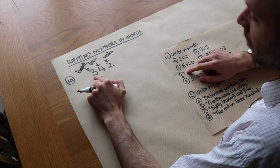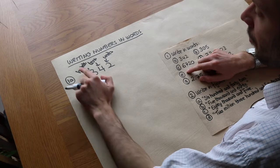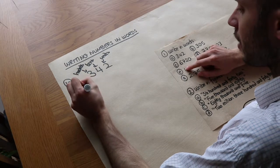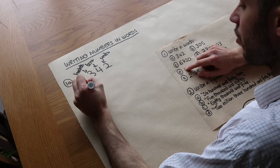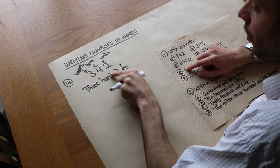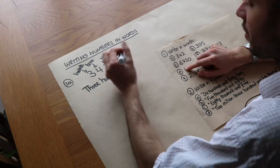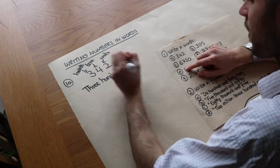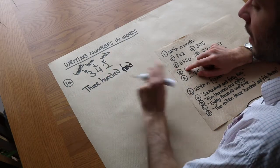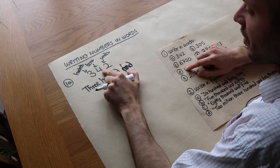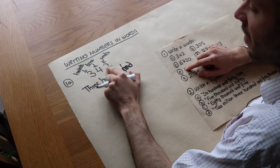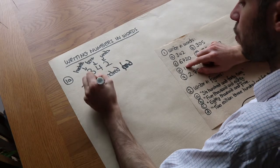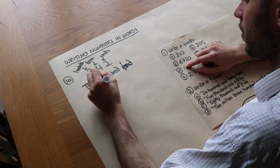We start with the leftmost digit. If we had 300 we write three hundred. After we say the number of hundreds we use the word 'and', and then rather than saying four tens and two we say 'and forty-two'.